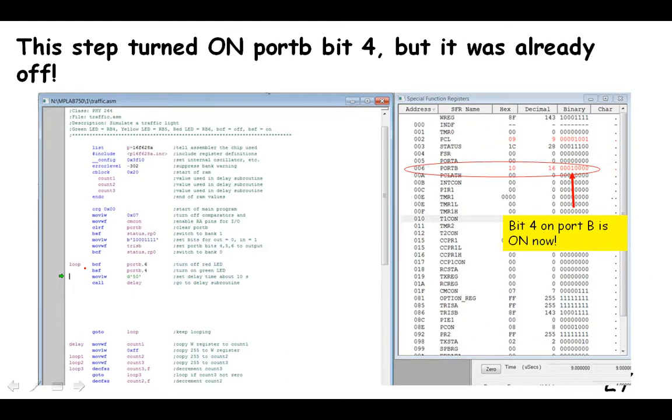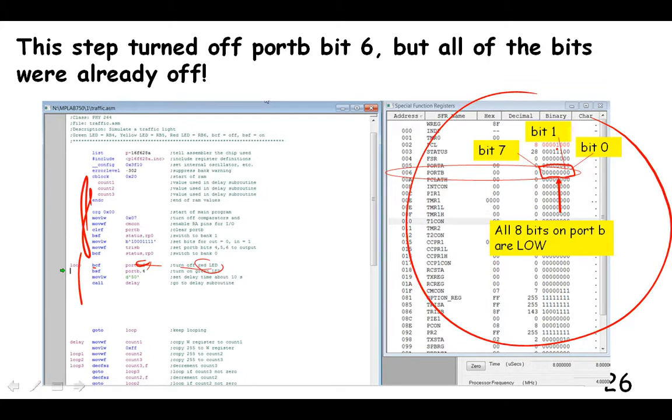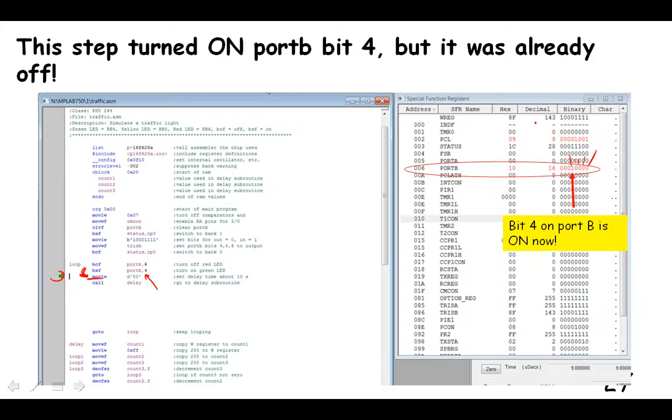Okay. So then in this step, we've just gone, now the arrow tells us where we will execute that on our next time we click that step forward. But right now we just executed the BSF command and what it did was turn bit four on. So here's bit zero, one, two, three, four. So bit four is now a one over here. It was a zero. See, so we just turned that bit on. And I guess that was the bit that was controlling the green LED for this particular program.